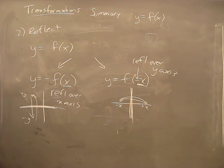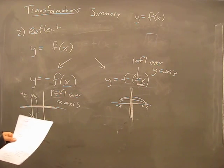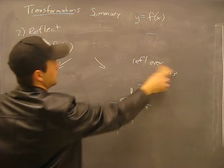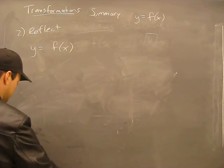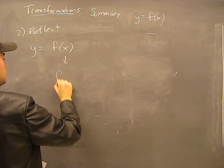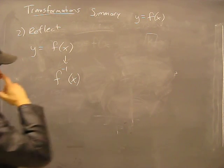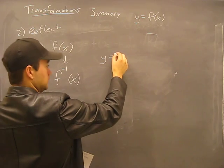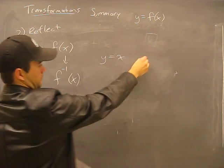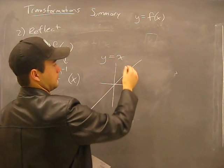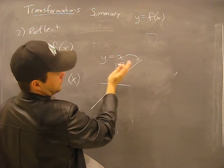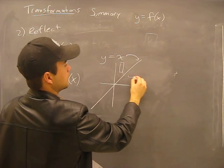But now you know why this is a reflection over the x axis. So that's your summary. Anything else I need to describe about that? This other thing right here. f inverse x. Remember this is when we had this line here. Any point that was right here gets reflected over the top of this.